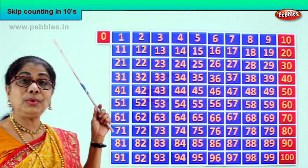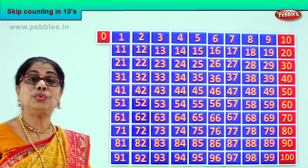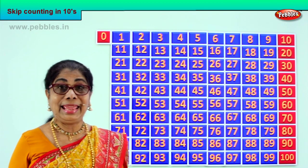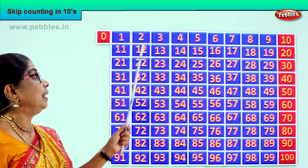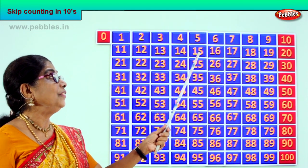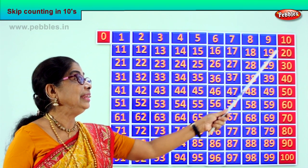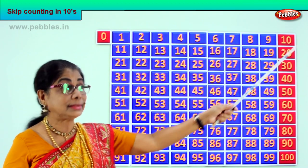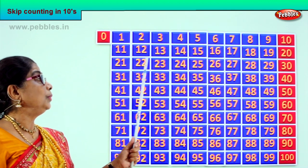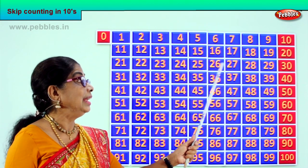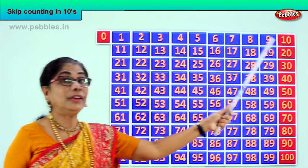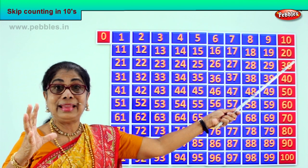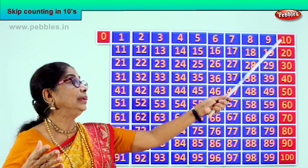Here we are. Let's look at the full pattern of zero to one hundred. So we jump from zero to ten. After ten: eleven, twelve, thirteen, fourteen, fifteen, sixteen, seventeen, eighteen, nineteen, twenty. So we jump from here to twenty. Next: twenty-one, twenty-two, twenty-three, twenty-four, twenty-five, twenty-six, twenty-seven, twenty-eight, twenty-nine, thirty. So after twenty, from twenty-one to thirty we jump. One ten, two tens, three.